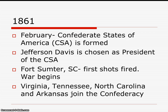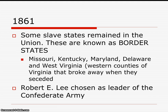After that incident, Virginia, Tennessee, North Carolina, and Arkansas are going to join the Confederacy as well. Some slave states are going to remain part of the Union, and these become known as border states because they literally border the Union and the Confederacy. These states are Missouri, Kentucky, Maryland, Delaware, and West Virginia, which comes into existence when Virginia secedes — the western counties break away to form a new state. Robert E. Lee is chosen as the leader of the Confederate Army, remembered as a leader in the Mexican-American War.